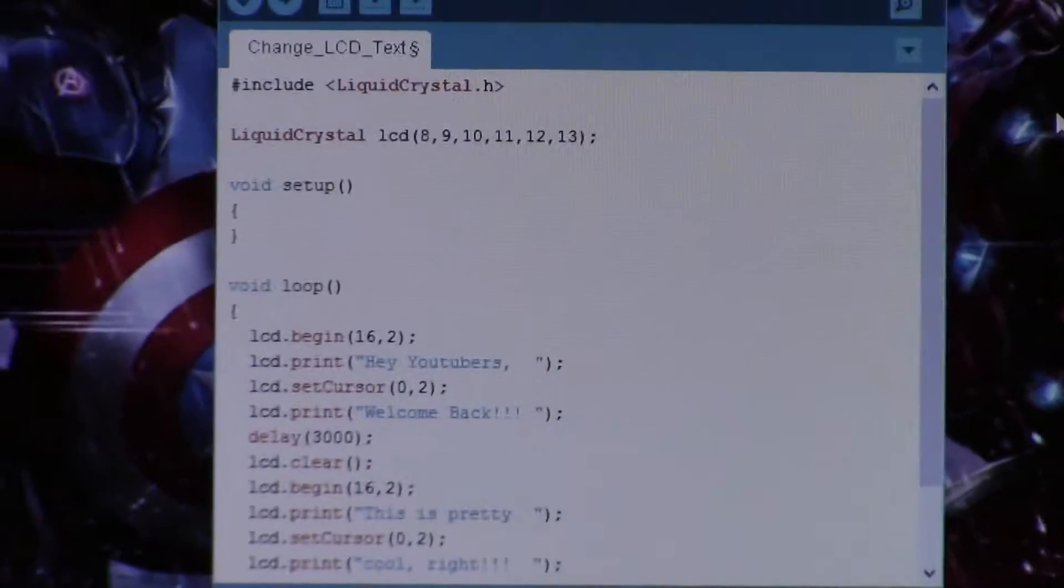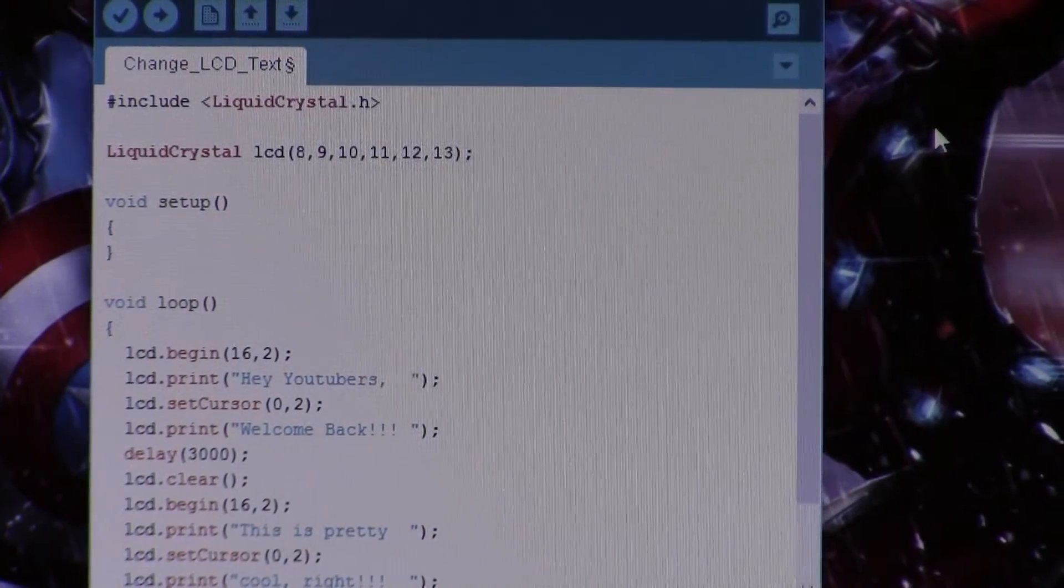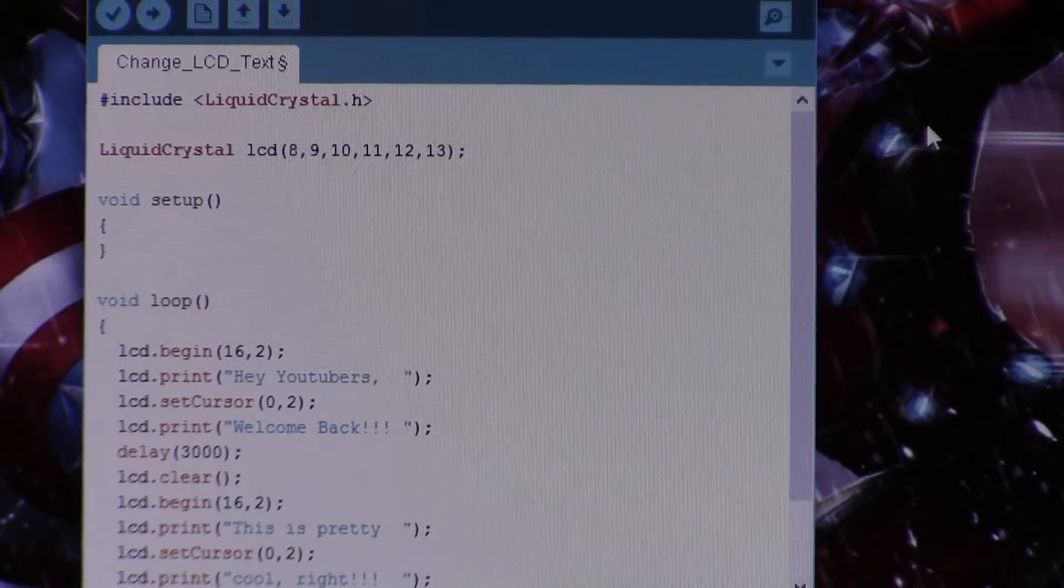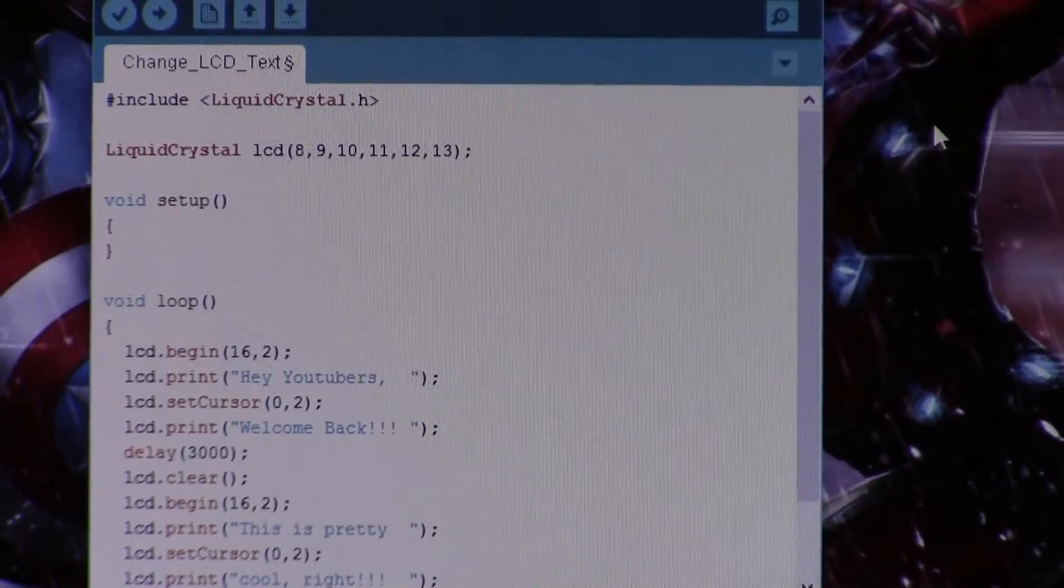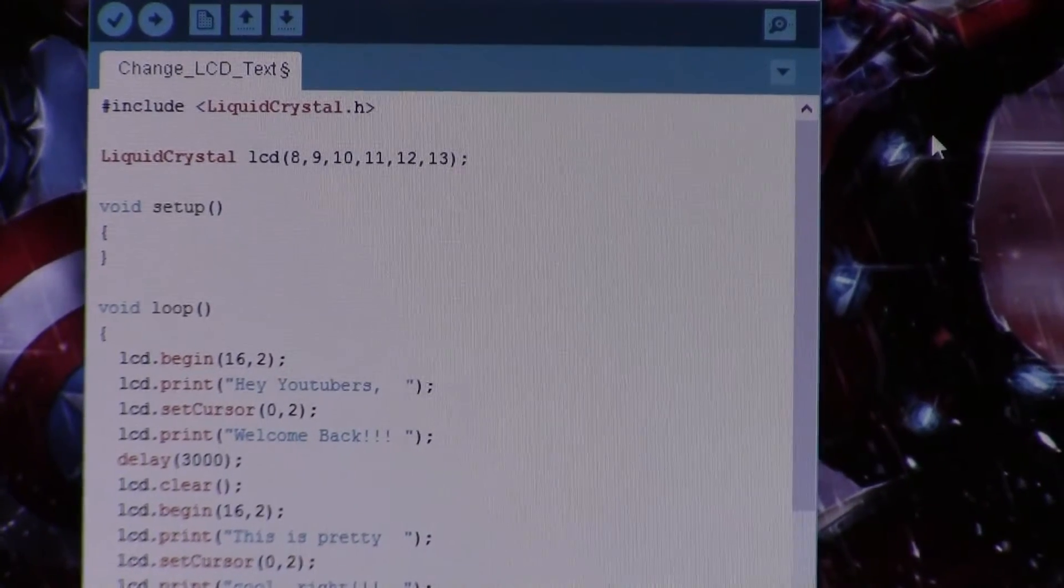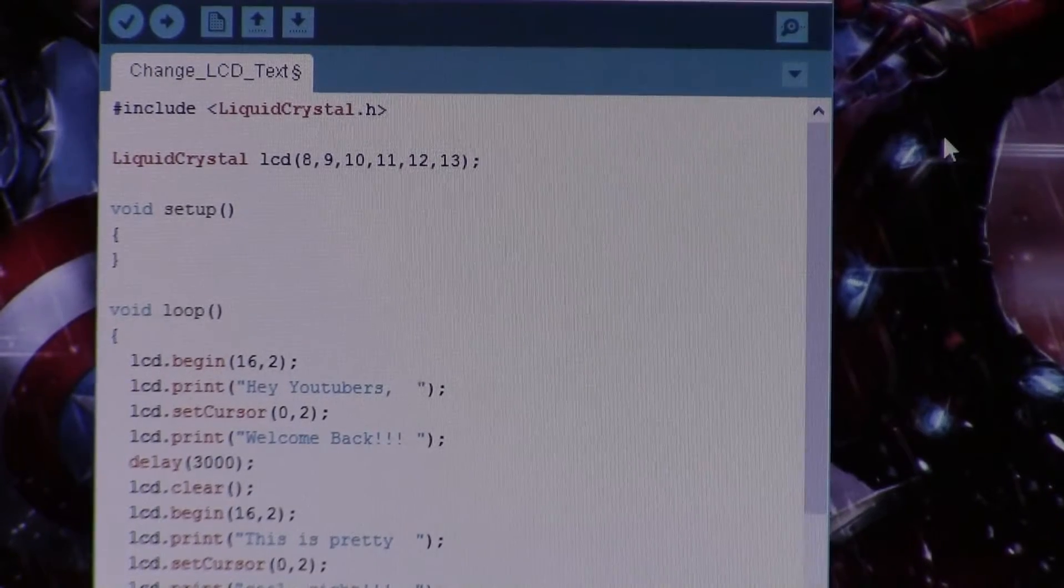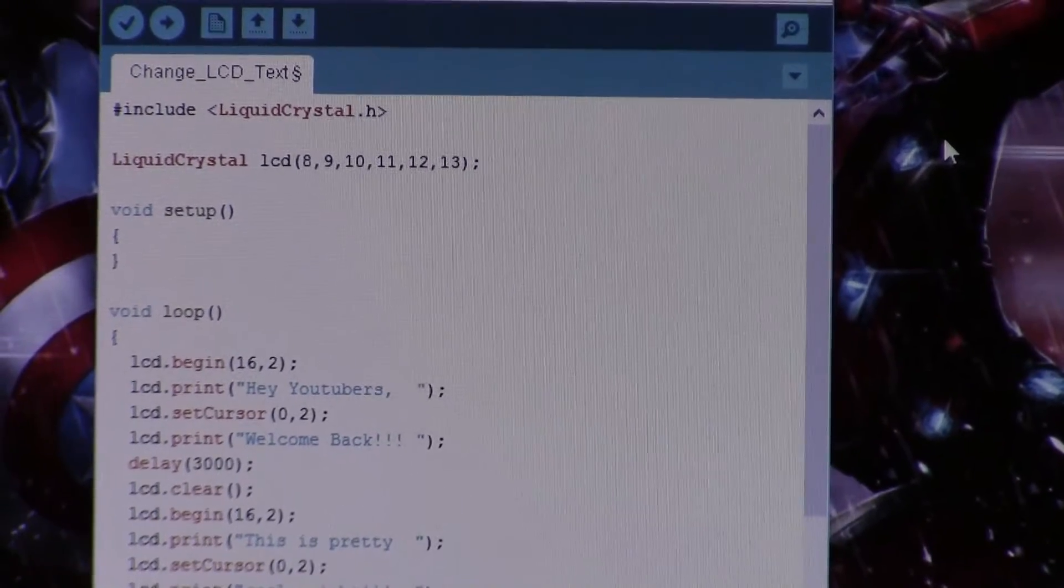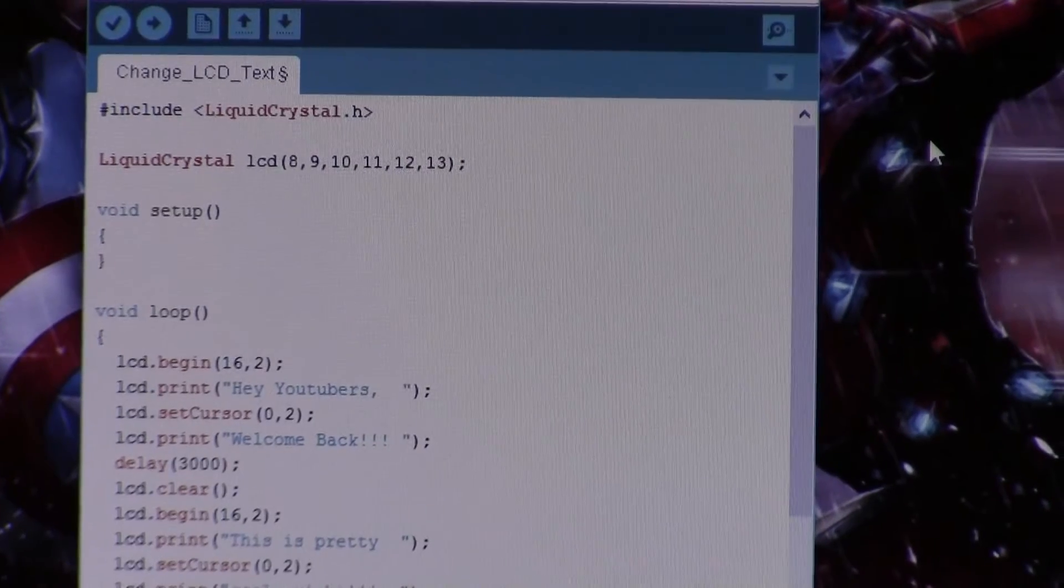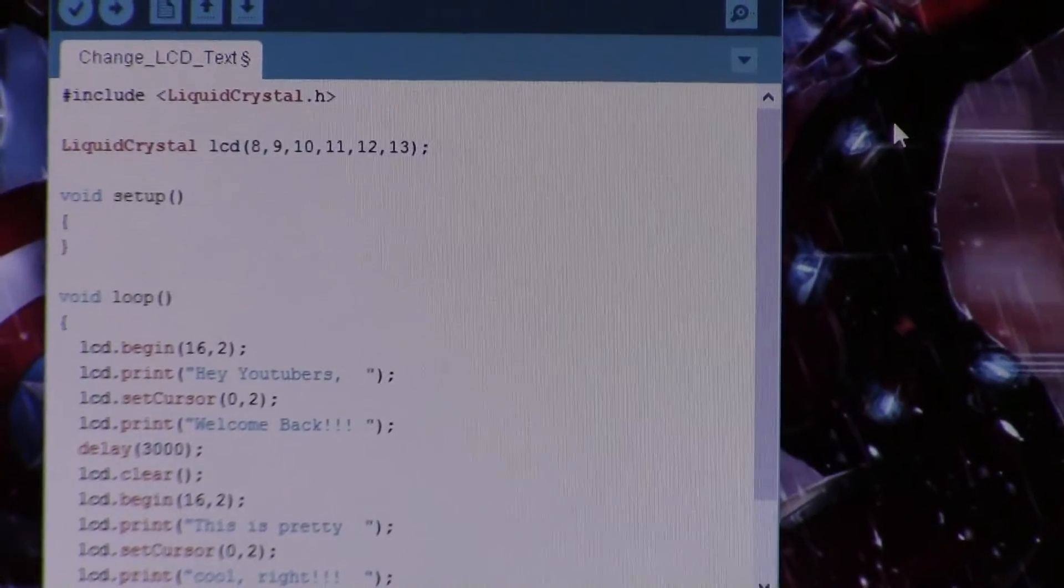In setup we're not going to put anything in there because everything we're going to need is going to be in the loop. In loop, we're going to set the beginning LCD at 16, 2, which is going to be where it starts. Then we're going to LCD print. You can put whatever you want in these parentheses. I just put hey youtubers.